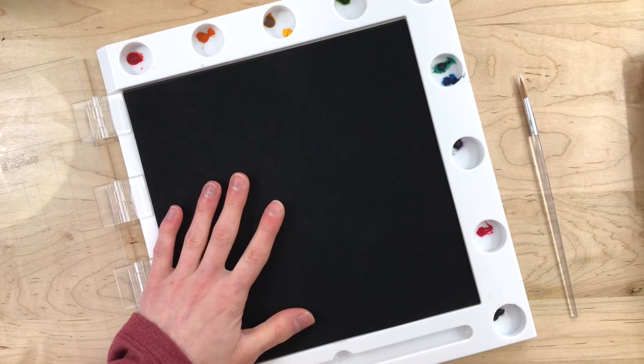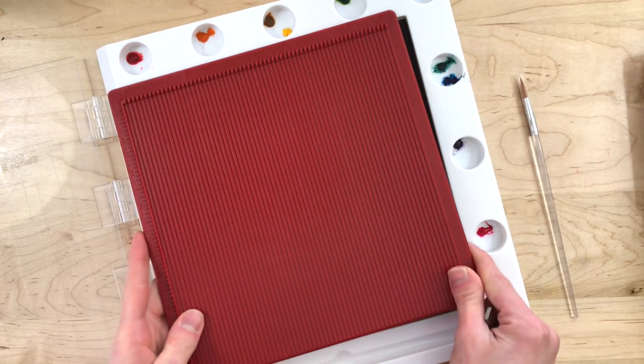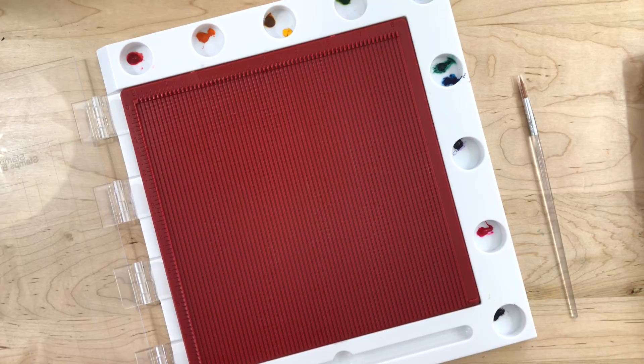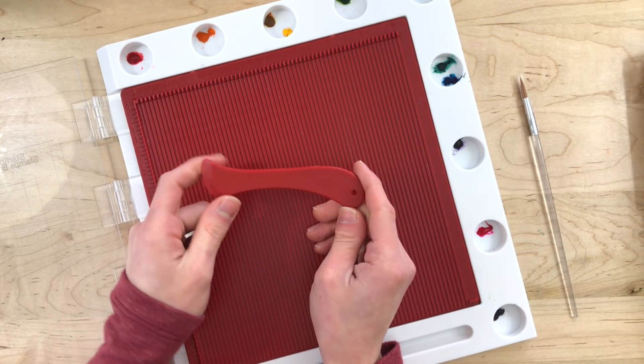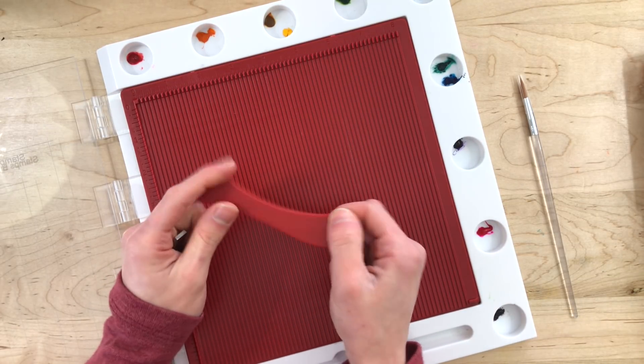The Eureka also comes with a scoring tablet that fits inside of that stamping area. It also includes a little scoring tool that allows you to create scored card bases.